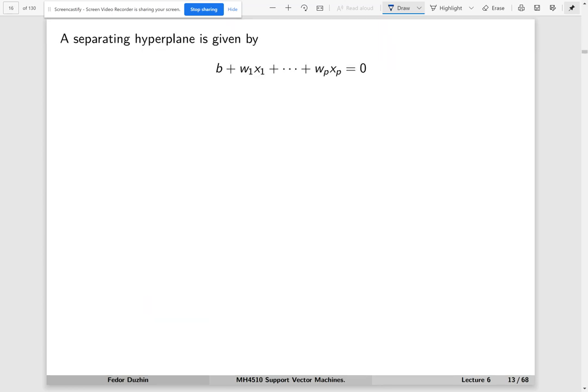Now it's going to become clear why we want negative 1 and positive 1 to label our two classes rather than 0 and 1. This is the equation of a separating hyperplane.